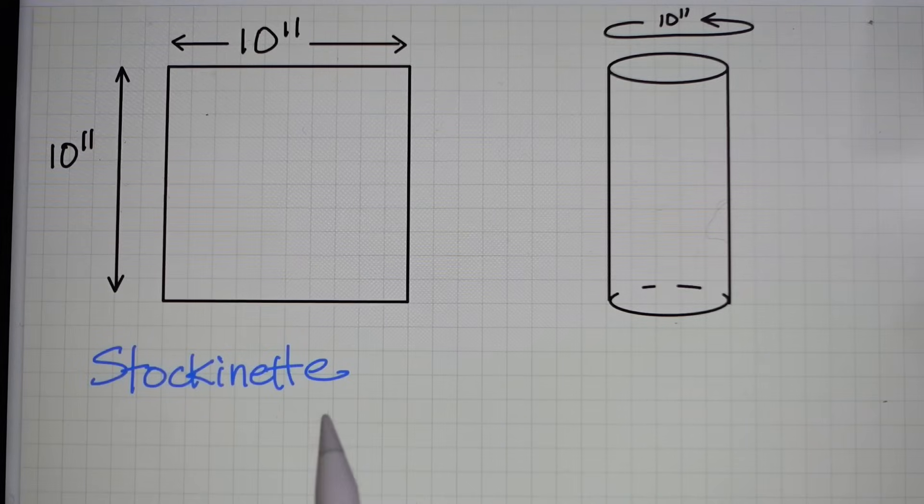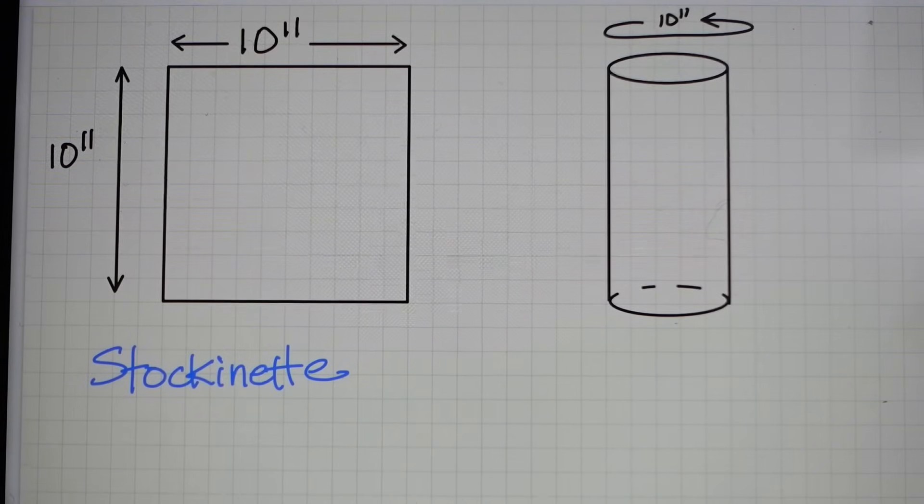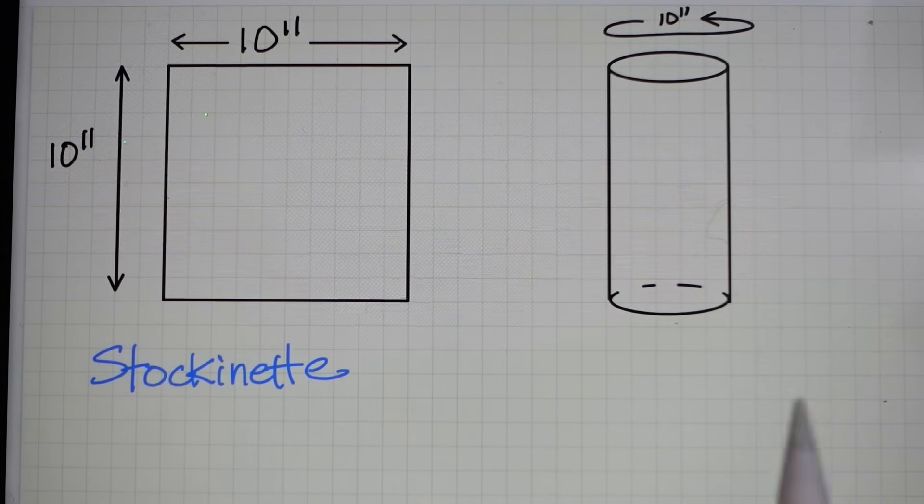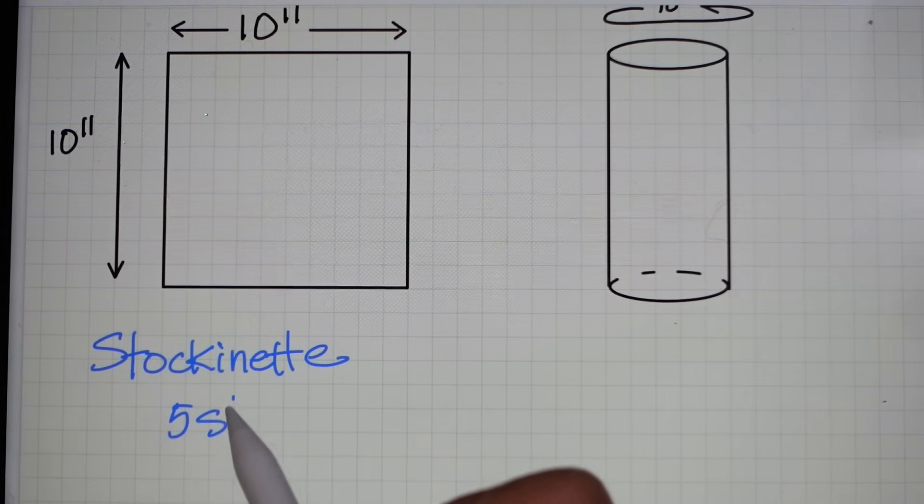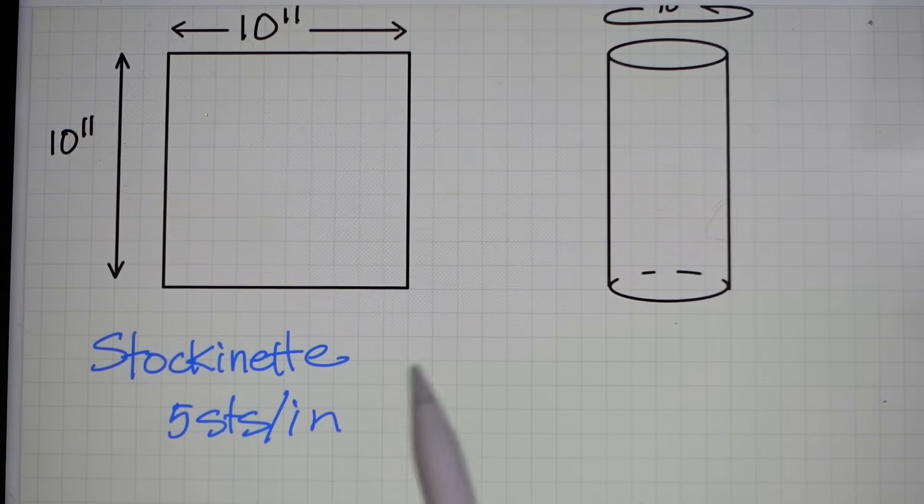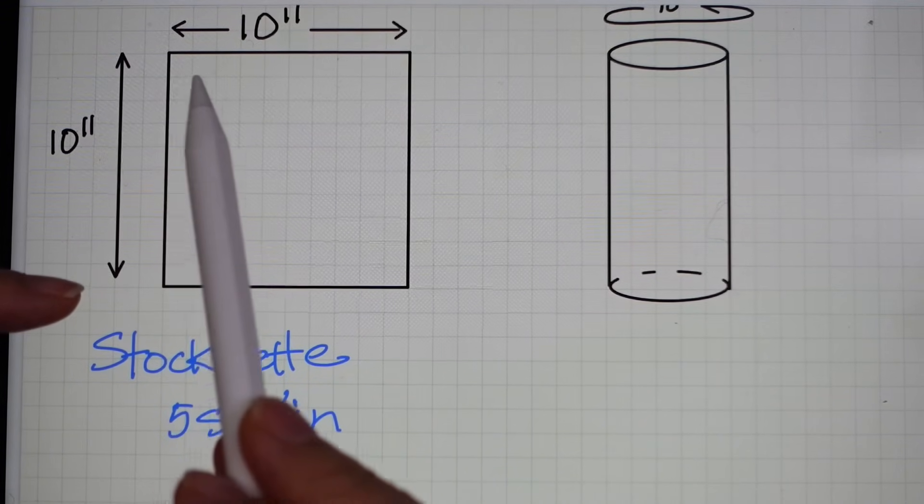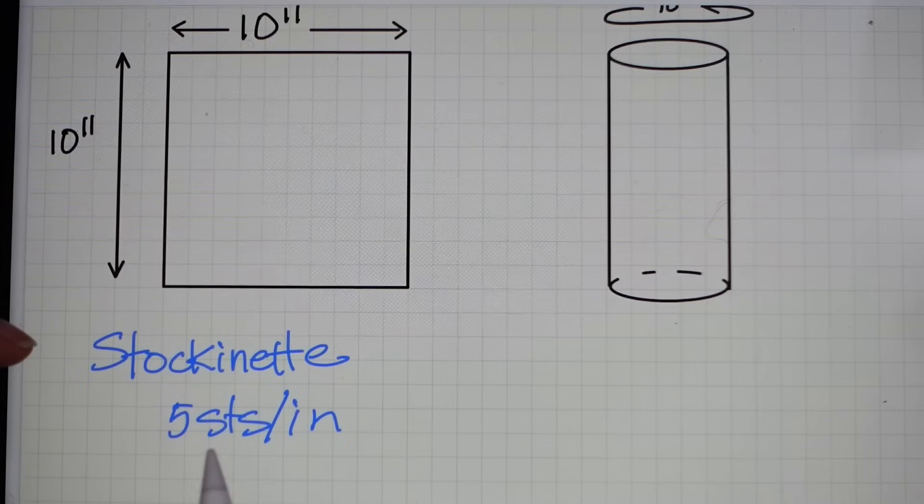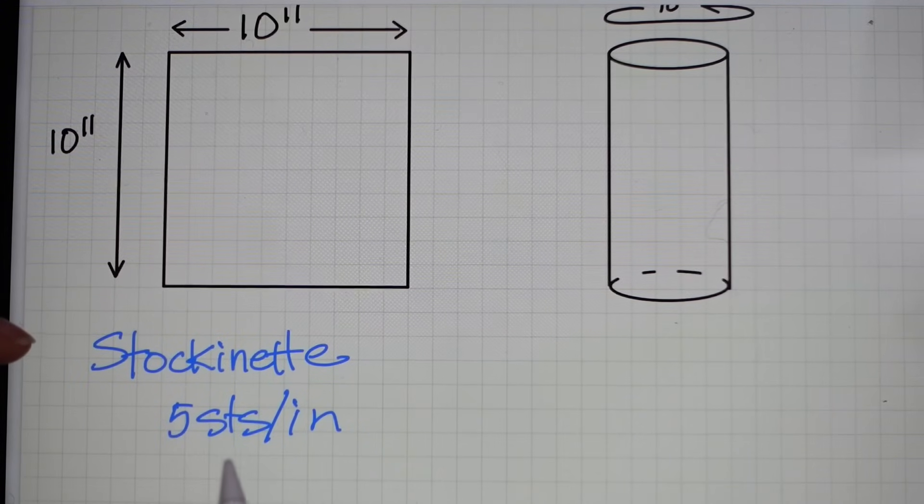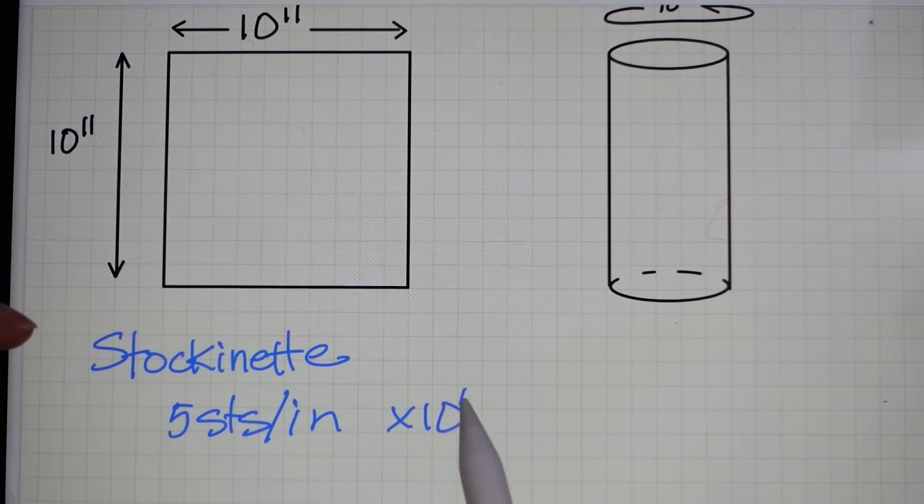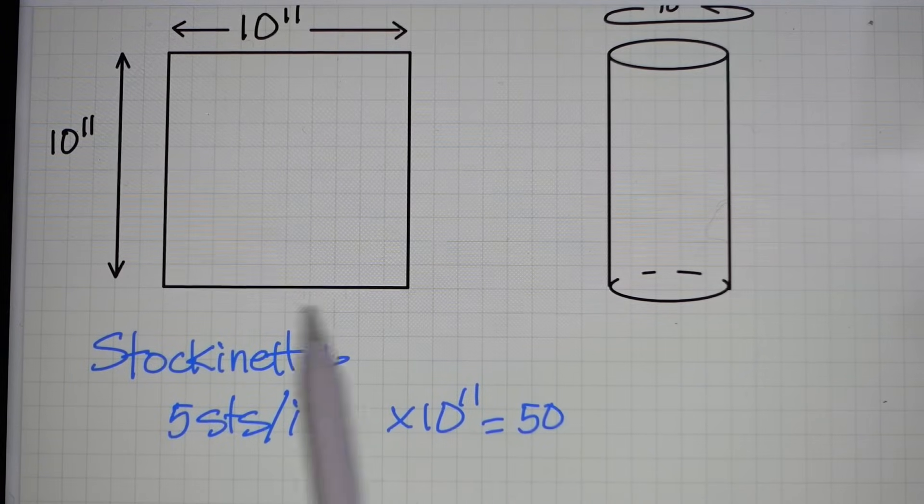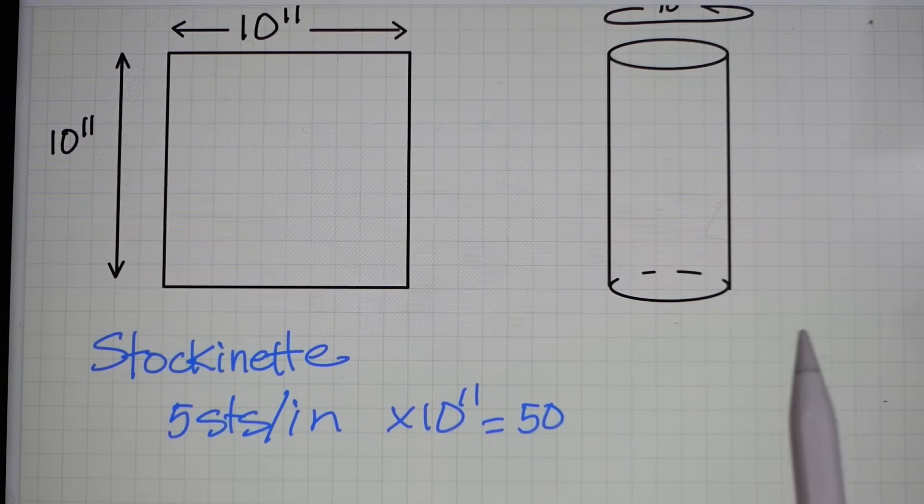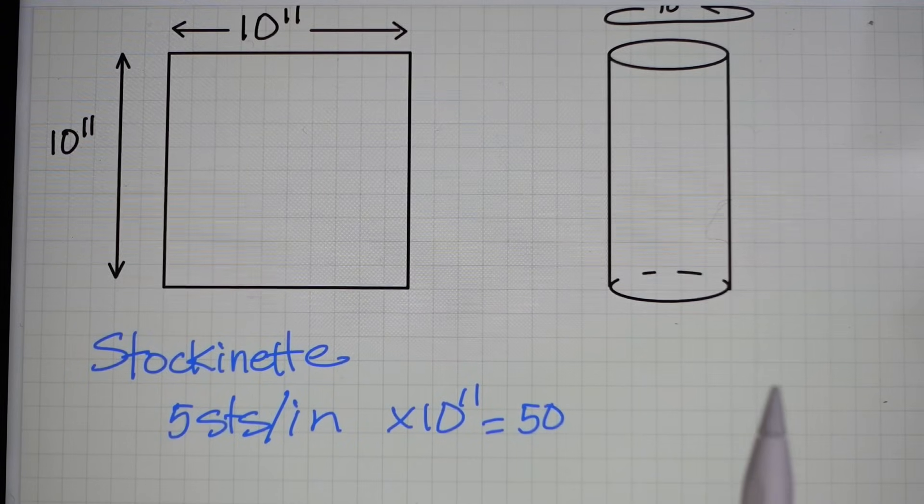So let's start with stockinette and let's look at a couple of different gauges and how that might work. Let's say we've done a gauge swatch, knit up a little swatch. You've figured out that you are getting five stitches per inch. It's pretty easy to see that if you want something that is 10 inches wide and each of those inches has five stitches in it, then you can say five stitches per inch times 10 inches is equal to 50 stitches. So it's pretty easy to fill that up. And likewise, for a tube that you wanted to be 10 inches in circumference, you could also use 50 stitches.